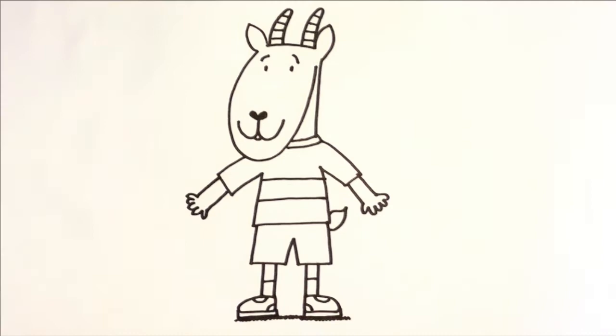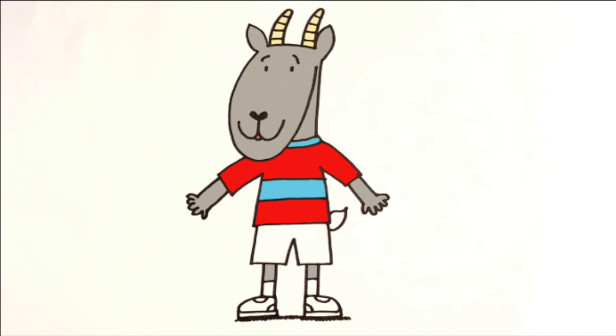Time to colour the billy goat in. I'm going to make the horns a pale yellow sort of colour. And you could make the billy goat's fur any colour. It could be white. It could be brown. It could be grey. I'm going to go for grey. And then add bright colours to the billy goat's clothes. You can make the clothes any colours you like. I think I'm going to leave the tail white.